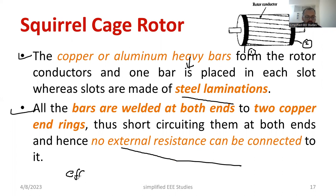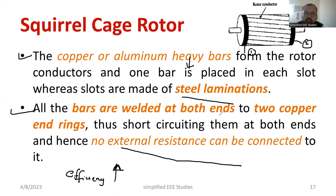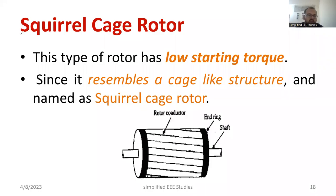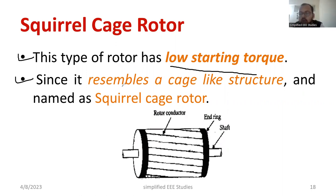The efficiency of the squirrel cage rotor is very high. It is called a squirrel cage rotor because the copper bar structure resembles the shape of a squirrel and is also like a cage-like structure — it resembles the skin or body cover of a squirrel. Since external resistance cannot be added, the starting torque of the squirrel cage rotor is very poor.